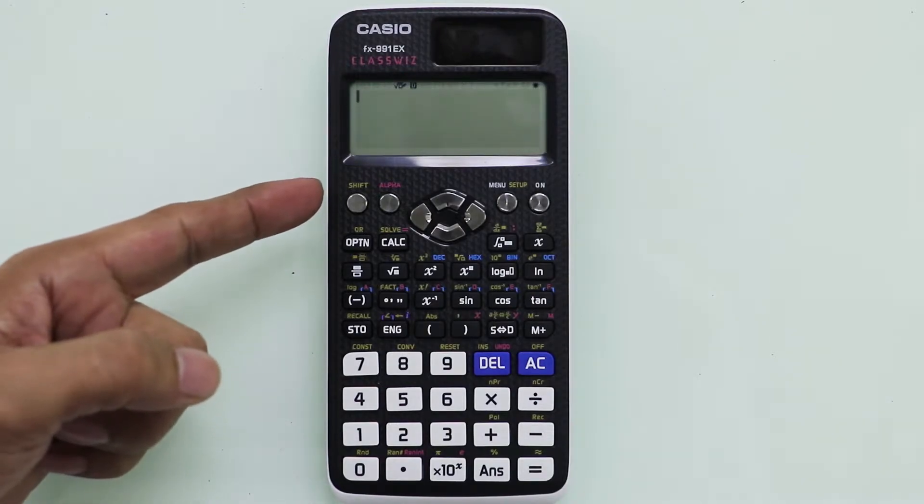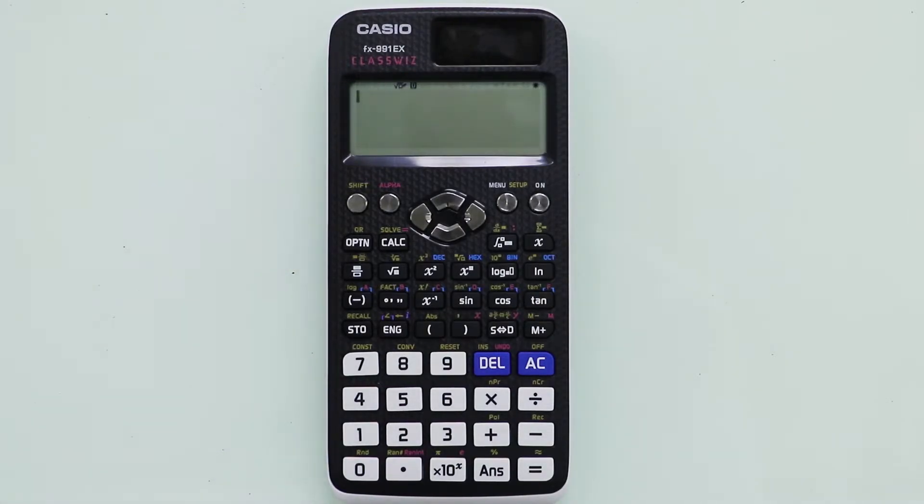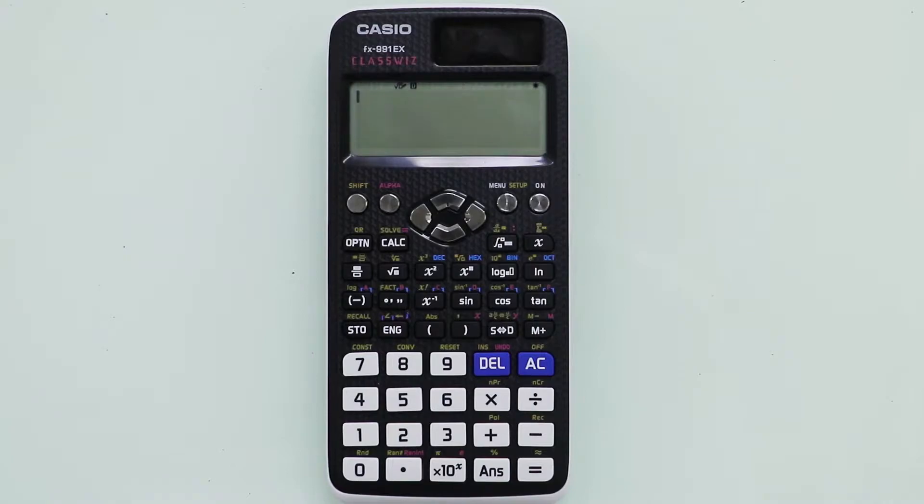All right, so for us to be able to access the yellow keys, what we have to do is to press the shift first. And for the red keys, of course, we have to press the alpha. So what about the blue keys and the violet ones? The blue keys can be accessed when we are already in the base-N mode. Also, the violet keys can be accessed if we are in the complex mode.